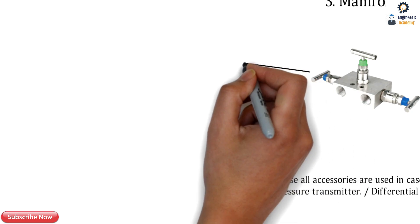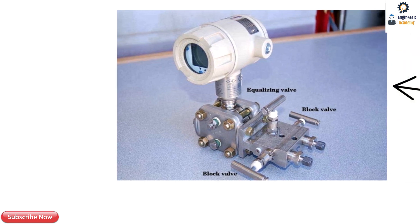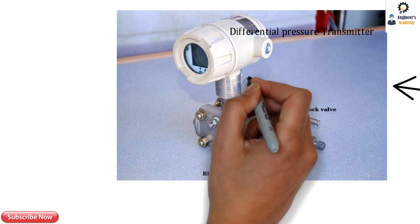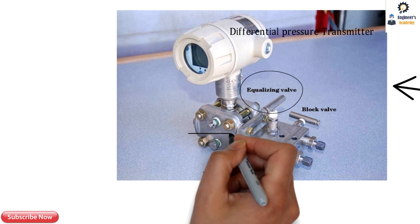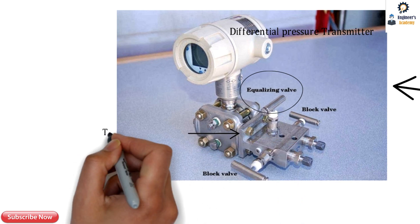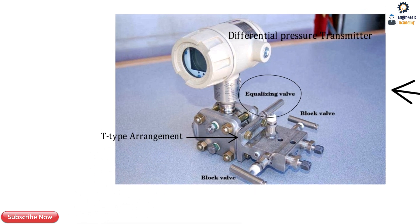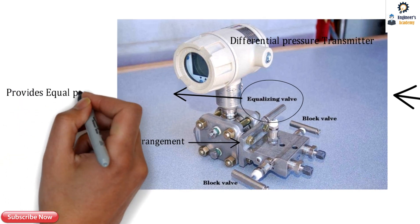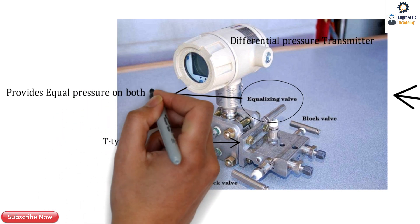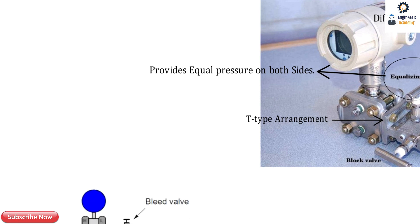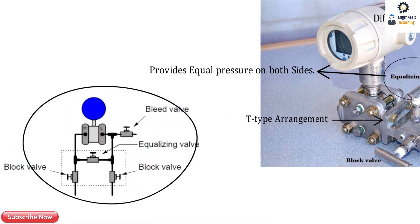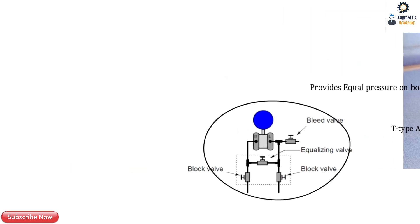The three-way manifold is used for differential pressure measurement. Here, a pressure transmitter is fitted with the three-way manifold. There is an additional equalizing valve along with two block or isolation valves, arranged in a T-type configuration. The equalizing valve provides equal pressure on both sides — the high pressure side and the low pressure side — which is essential for differential pressure measurement.